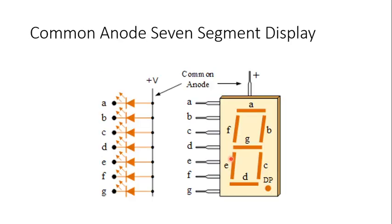There are two types of 7-segment displays. One is common anode and the second is common cathode. This is decided by how you connect the common point for all the LEDs present in the 7-segment display. According to that connection, there are two types: common anode and common cathode.